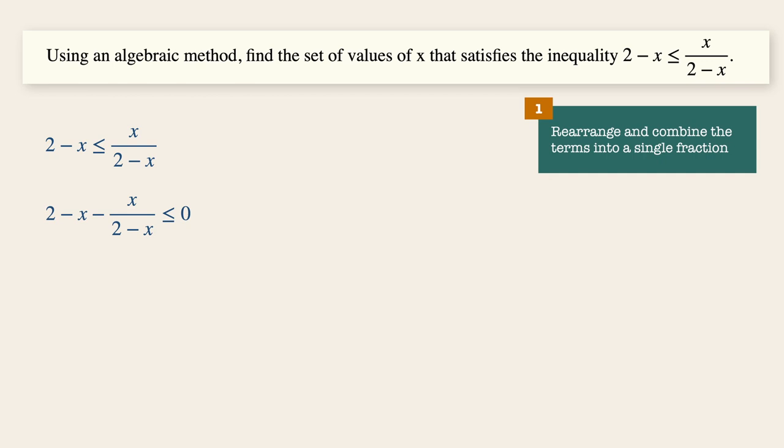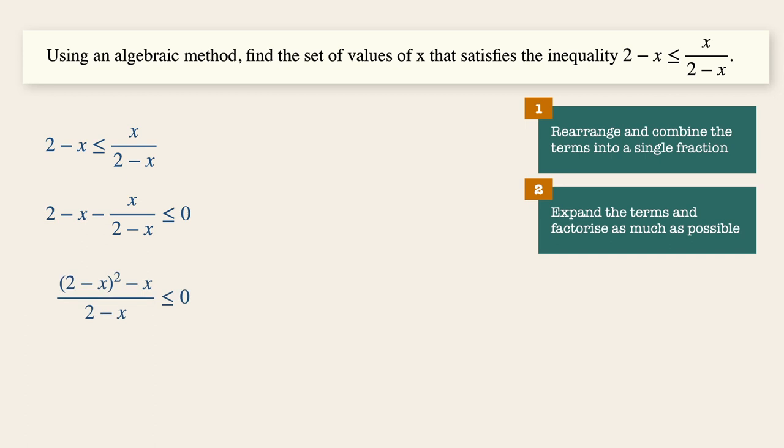And step number two is to expand the terms on the numerator and factorize it as much as possible. Now we will then have x squared minus 5x plus 4. And we factorize the expression to give us x minus 1, x minus 4. Now since we have a zero on the right hand side, we go on to step number three now.